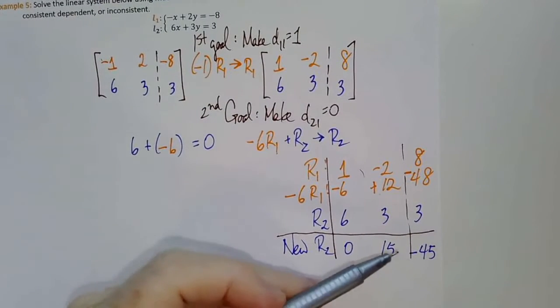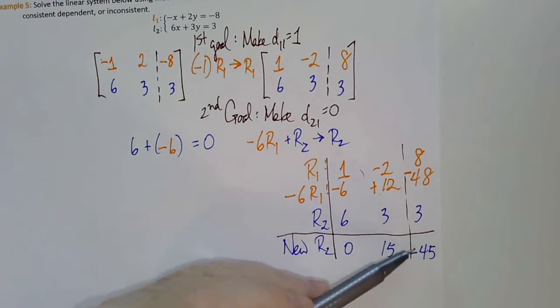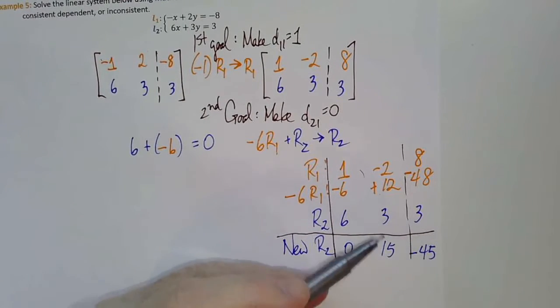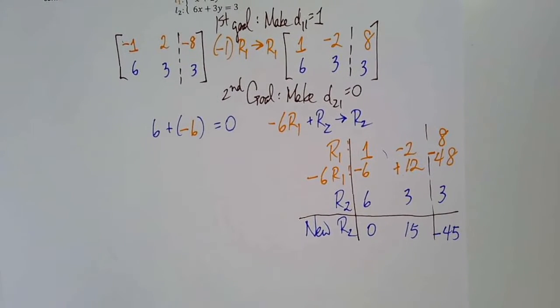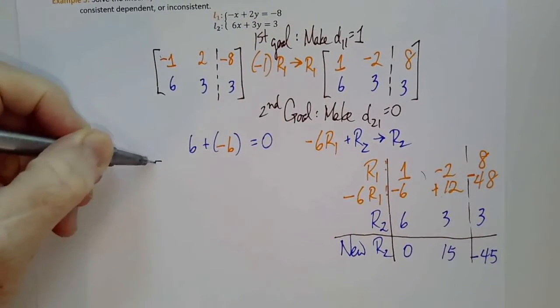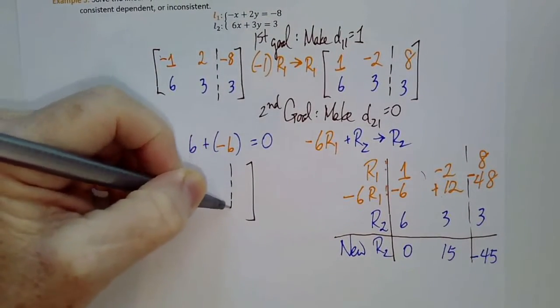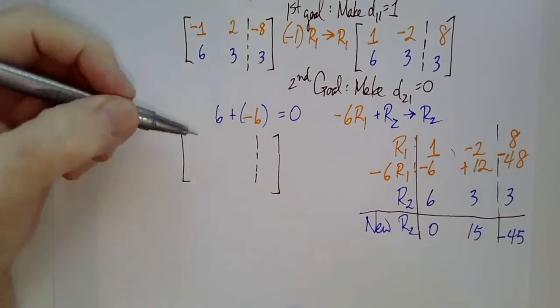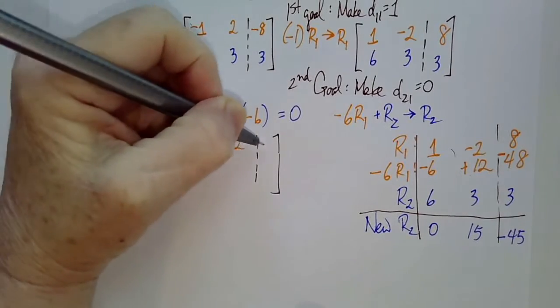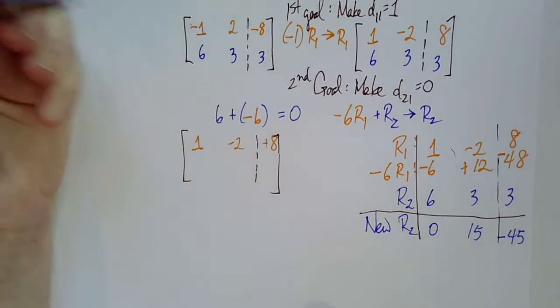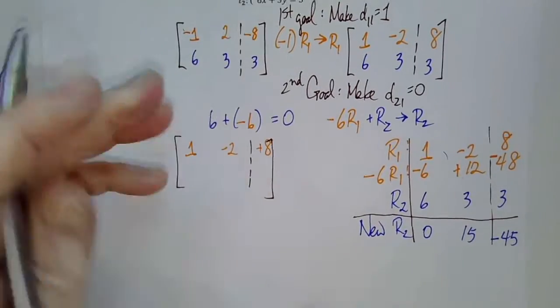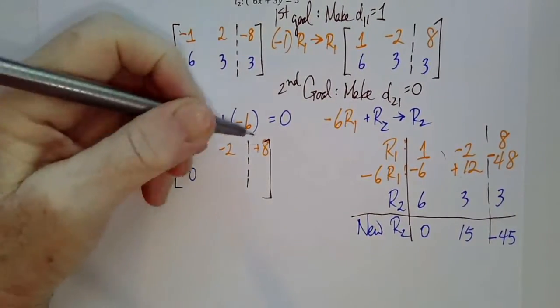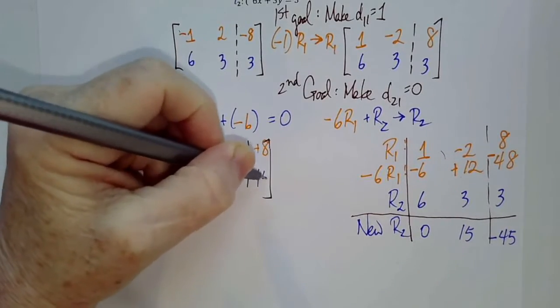Right at this step, I know things are probably okay because negative 45 can be divided by this 15 and get an integer. We won't get a fraction. So that's very good. And that means that our new matrix is 1, negative 2, positive 8, and 0, 15, negative 45.